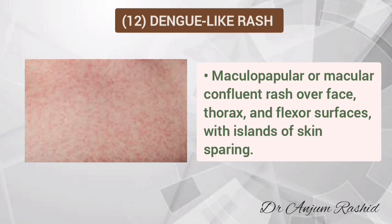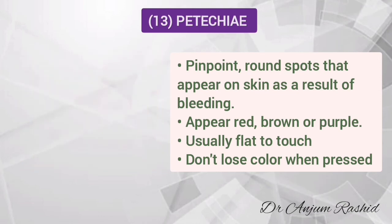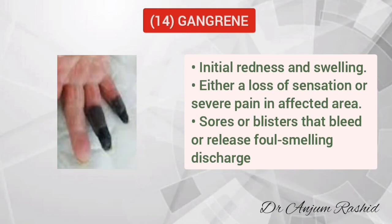The dengue-like rash is characterized by maculopapular or macular confluent rash over the face, thorax, and flexor surfaces with islands of skin sparing. Some COVID patients have presented with petechiae — pinpoint round spots that appear on the skin as a result of bleeding. These may appear red, brown, or purple, are usually flat to touch, and don't lose color when pressed.